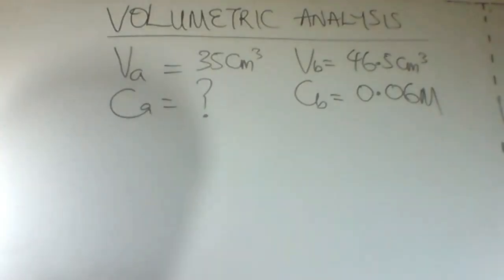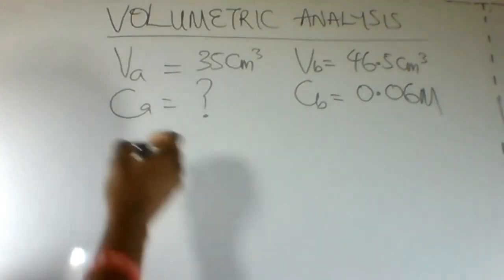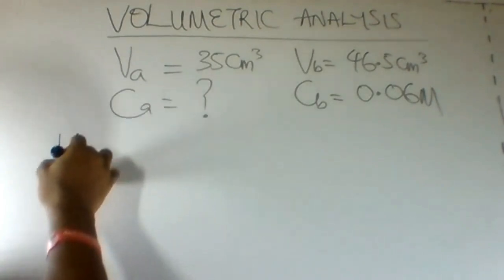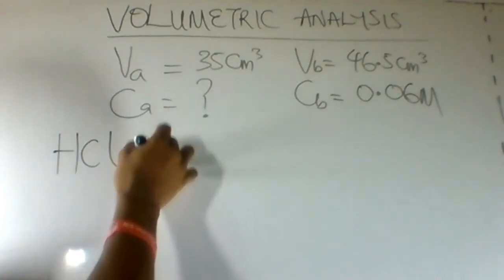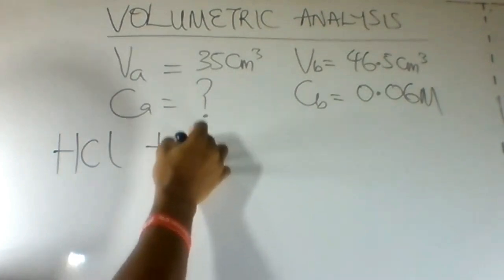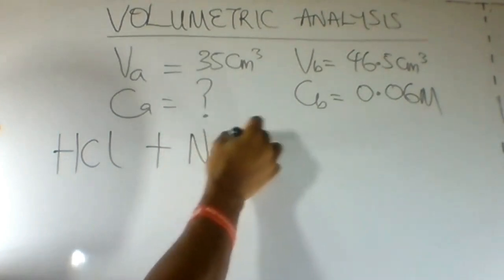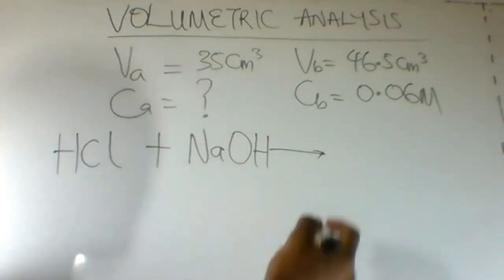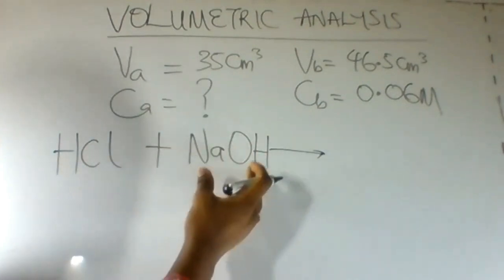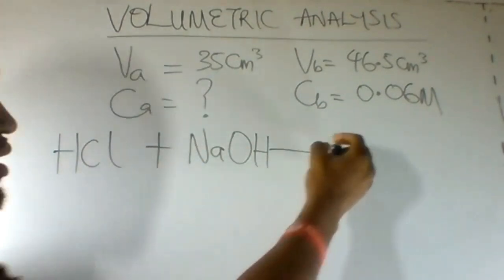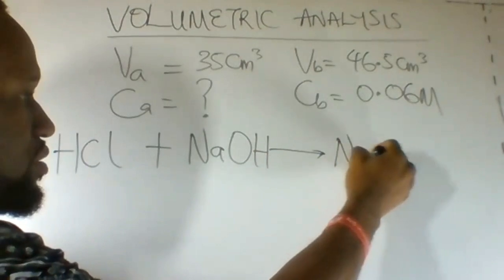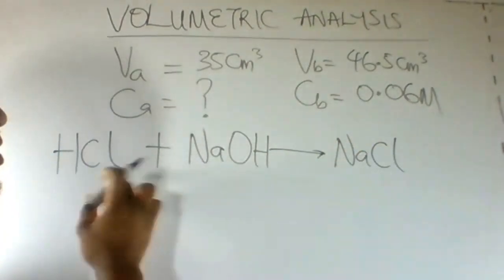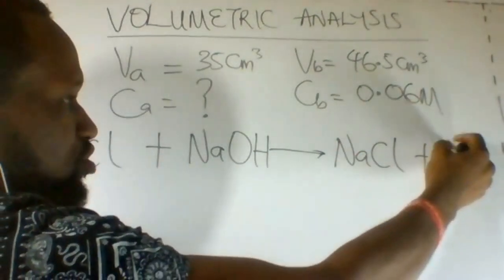Let's write down the equation for the reaction. In the equation, HCl reacted with NaOH. HCl combining with NaOH. Our product is NaCl plus H2O.